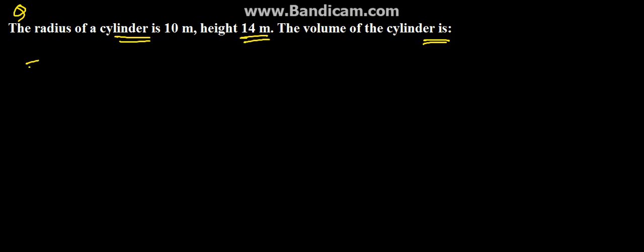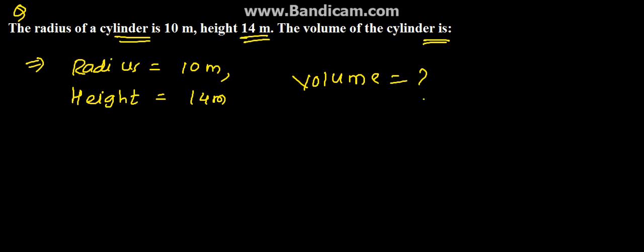So here we have been given the radius is 10 meter and the height is 14 meter, and we need to find the volume of the cylinder. So the formula for volume of cylinder is equal to pi r square h.